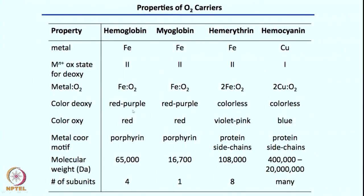It is a completely reversible process. Our blood delivers oxygen at every part of the body as O2 — not as superoxide, not as peroxide, not as hydroperoxide. It is just the O2 molecule that gets delivered. However, you must remember that these are not just simple iron-oxygen binding events; electron transfer is happening during these processes. For hemoglobin and myoglobin, upon oxygen binding the color becomes red-purple; for hemerythrin it is colorless in the deoxy form and becomes red upon oxygen binding; for hemocyanin it becomes blue.